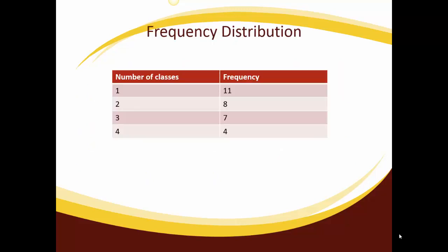So I turned it into a chart where I have the number of classes listed along with the frequency. So here you can see that 11 students take one class, eight students take two classes, seven students are taking three classes, and four students are taking four classes.